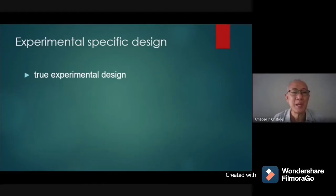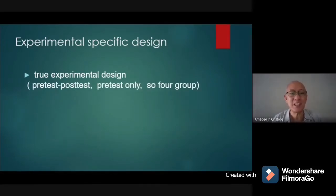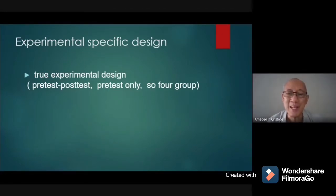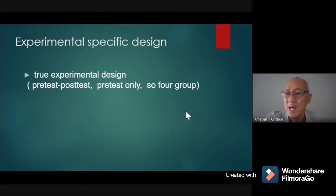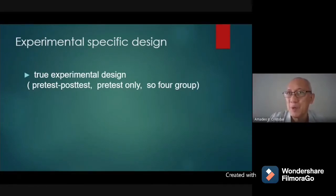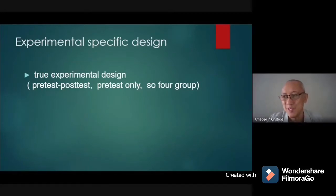The first type is true experimental design. The pre-test and post-test is a kind of true experimental design. When we speak about true experimental design, you have to have a random selection of your respondents. For example, you look at the performances of students in senior high school in an English class using synchronous and asynchronous methods. You randomly select the section for synchronous and the section for asynchronous.